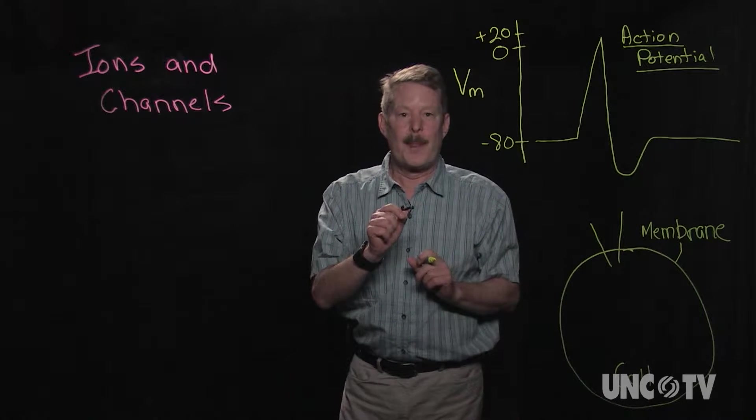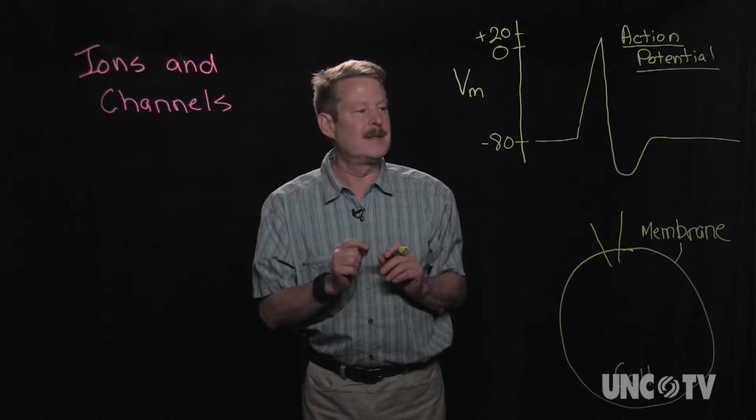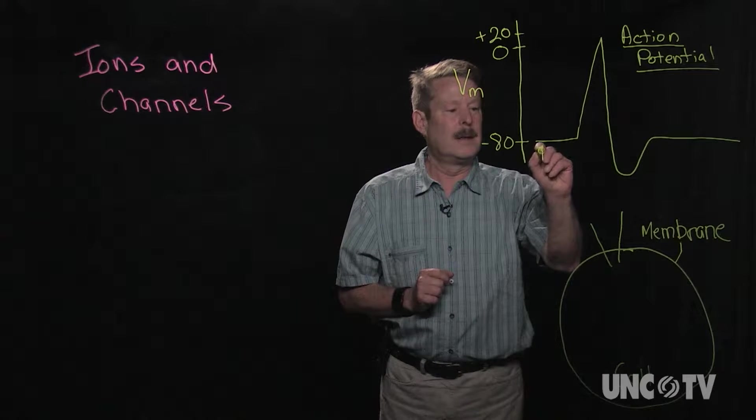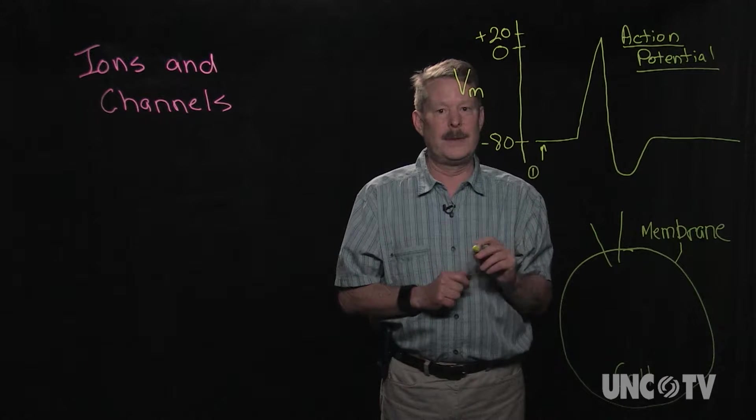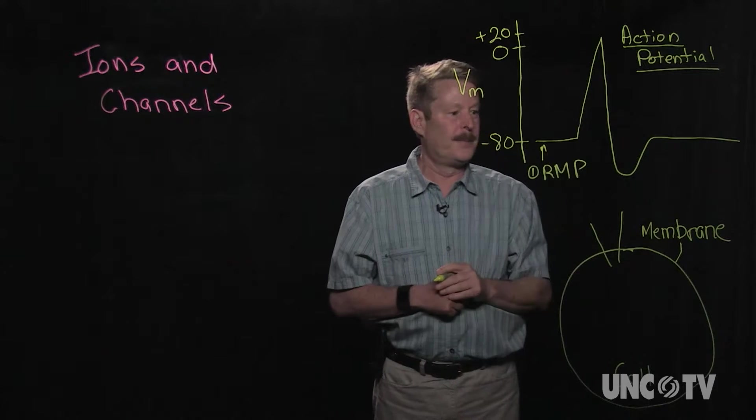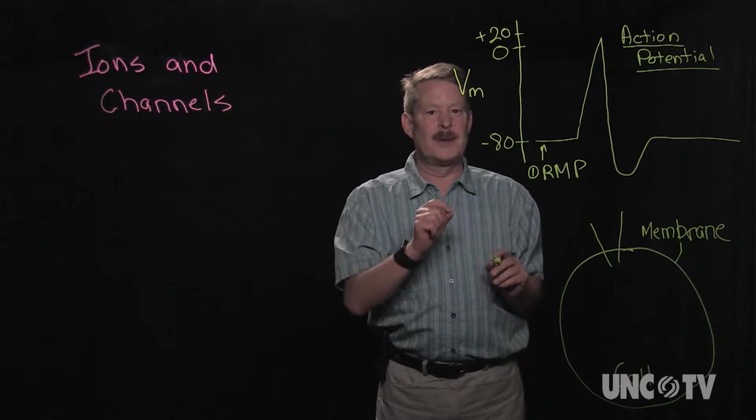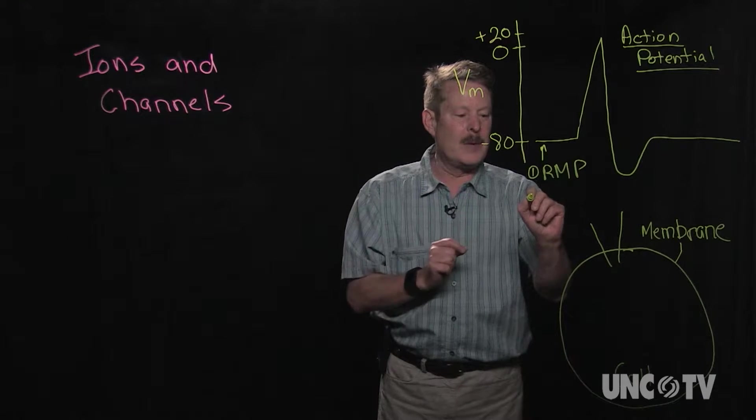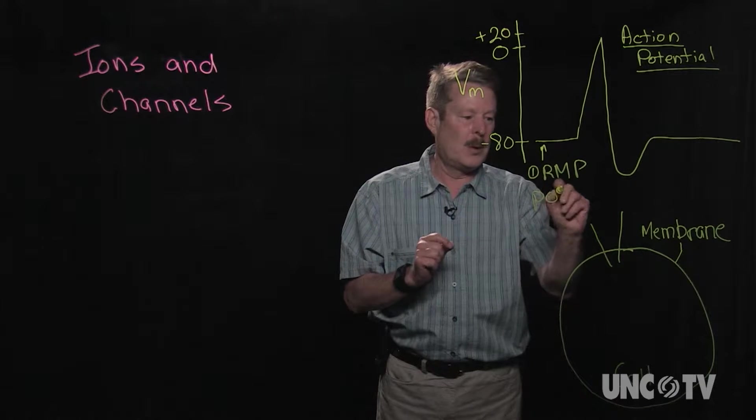So the action potential itself consists of four phases. The first phase, right here, is called the resting membrane potential. When cells are at the resting membrane potential, when they're at a negative membrane potential, we use a term called polarized.